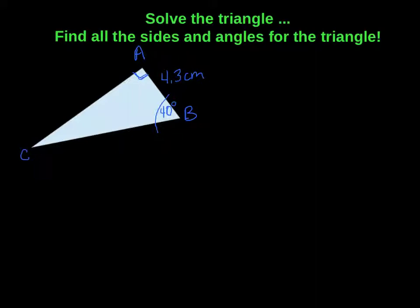The first thing we want to do is label our triangle with opposite, adjacent, and hypotenuse. So this is our opposite side, this is our hypotenuse, and this is our adjacent side.